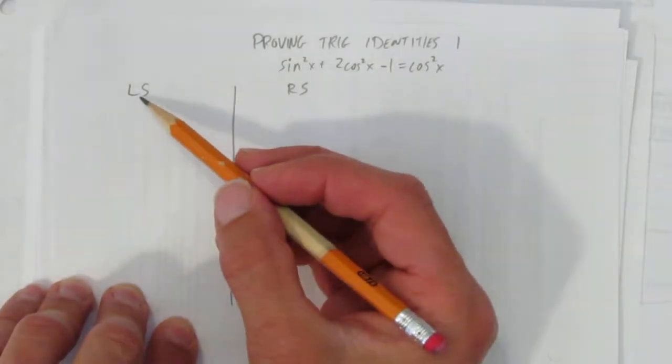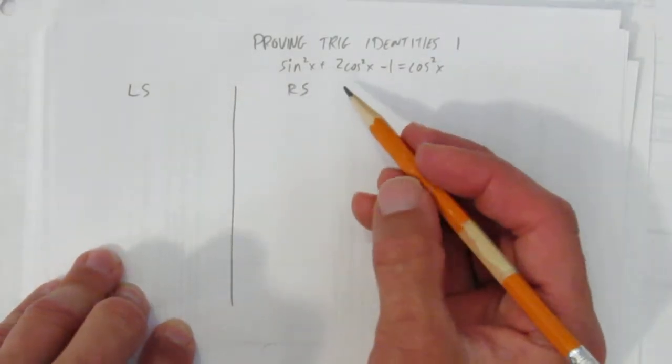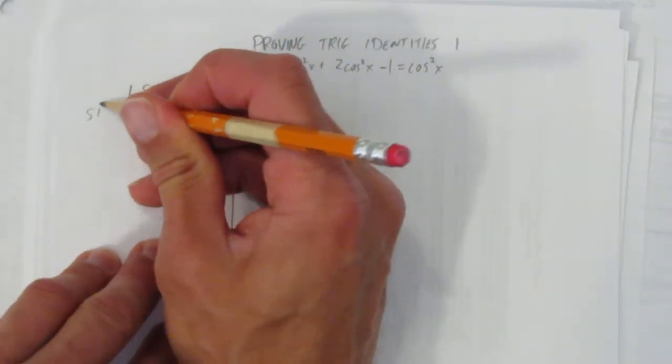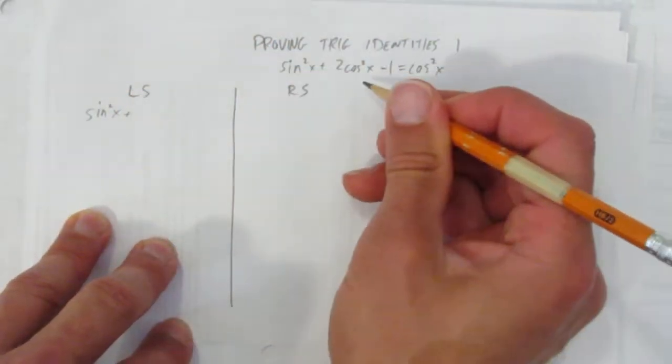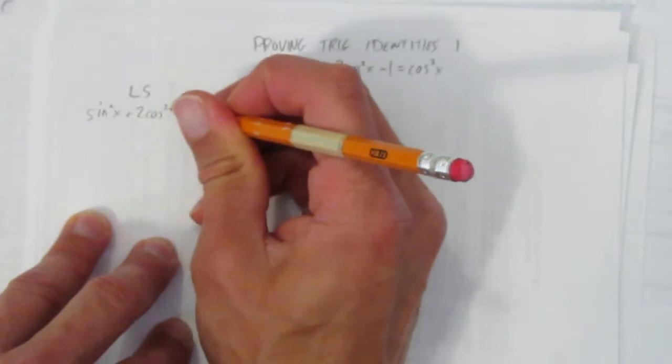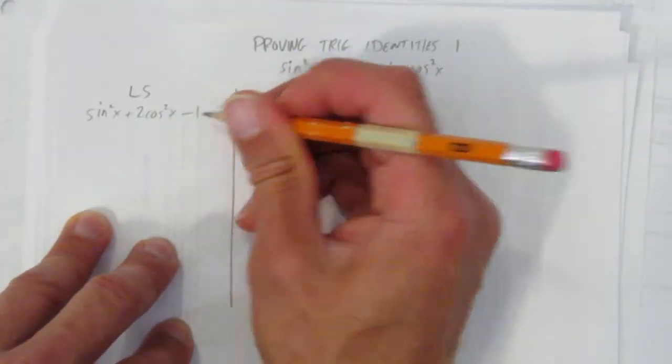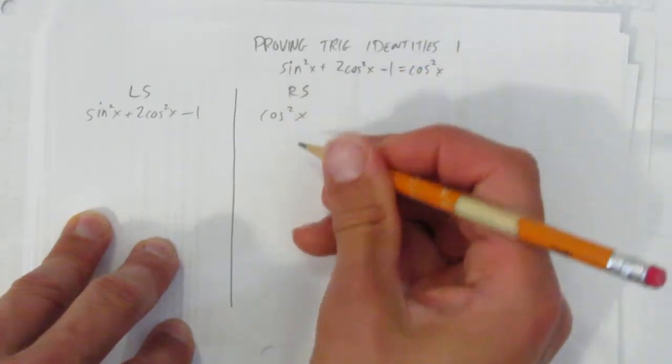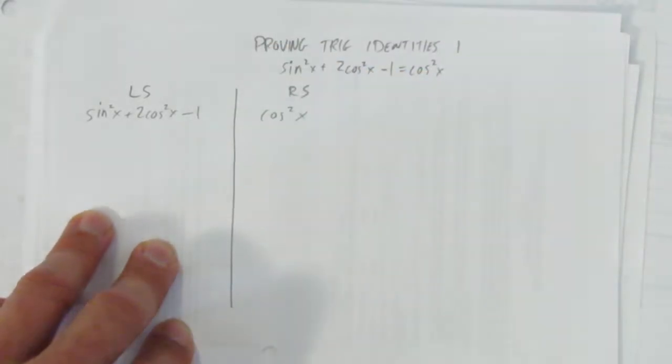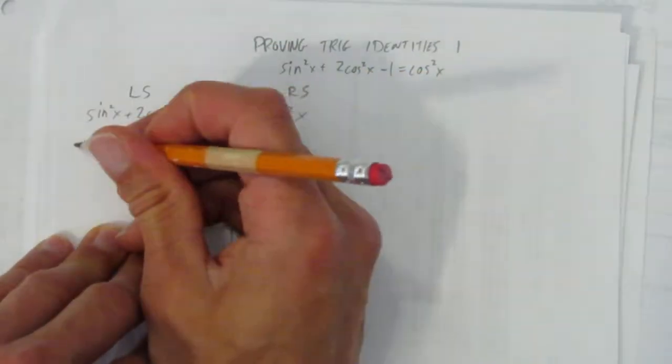The first thing to do is write left side, right side, and split it into those two pieces. On the left hand side, we have sin²x + 2cos²x - 1. And on the right hand side, we have cos²x. They'll now be separate pieces with a line down the middle. Put an equals here.